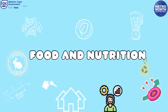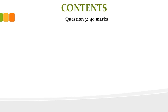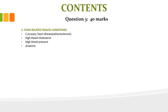Now we're going to focus on a couple of areas to help you in your final preparation, starting with the food and nutrition question — question 3 in your paper, worth 40 marks. It is important to understand that some content has been taken out for 2022, so use your exam guidelines in conjunction with your studying to make sure you do not study extra work. The first section on food nutrition covers food-related health conditions: coronary heart disease, high blood cholesterol, high blood pressure and anaemia.